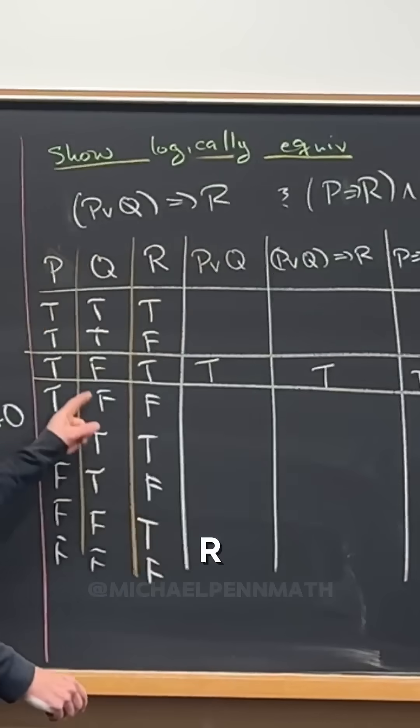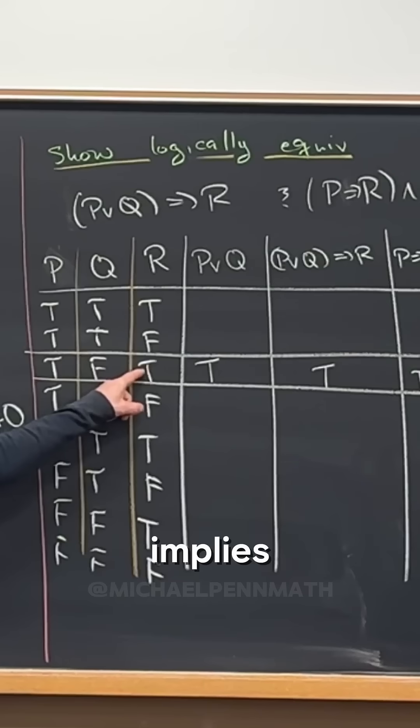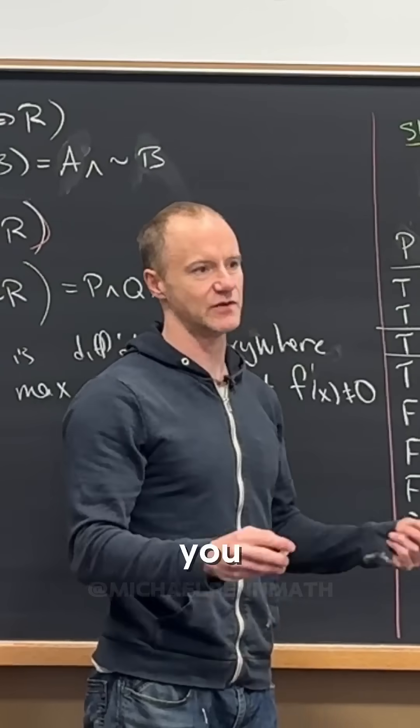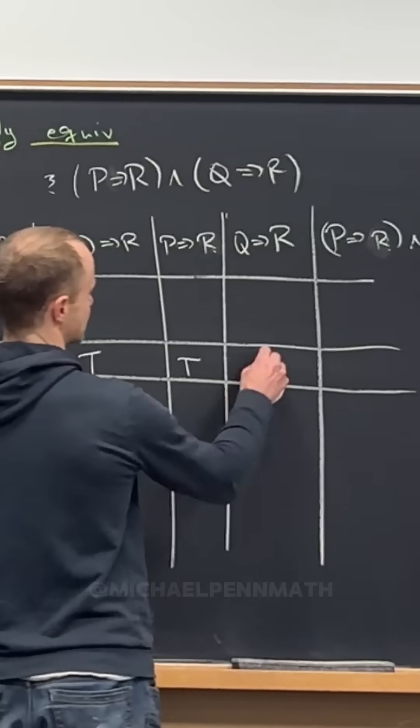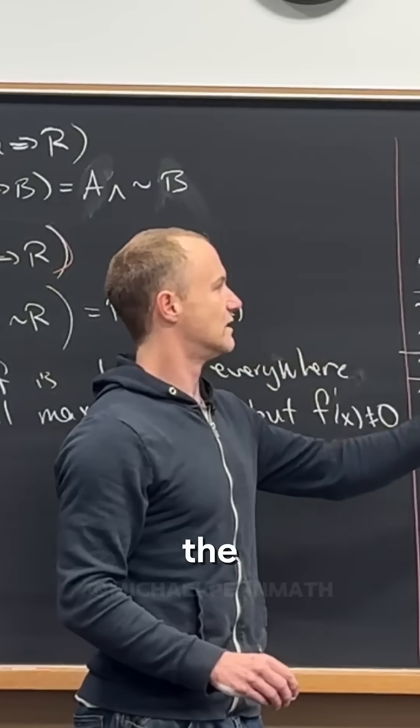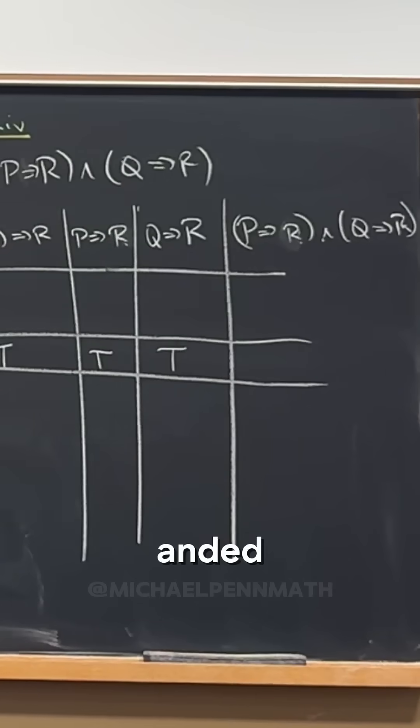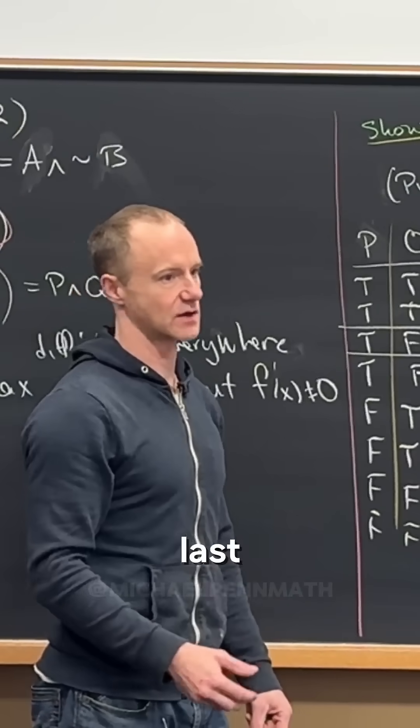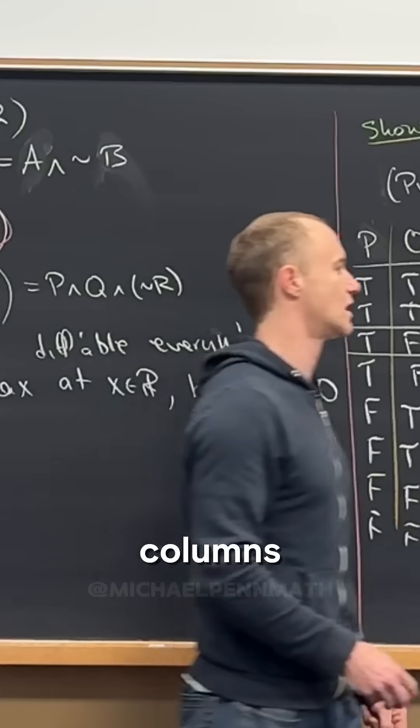Q implies R. Q implies R is false implies true, but false implies true is a true statement, right? That's one that doesn't feel right, but then if you talk through it, it makes some sense, right? And then the last two columns anded are the actual last column. I guess the previous two columns anded.